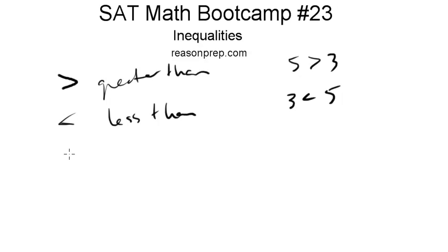Then you have also greater than or equal to with this line under it, or less than or equal to. And that just means not only can it be greater than it, but it can also be equal to it. In this case, not only can it be less than it, but it can also be equal.